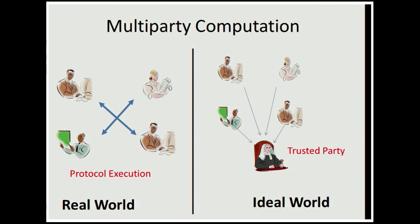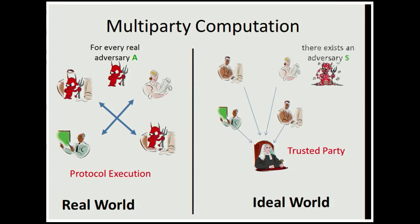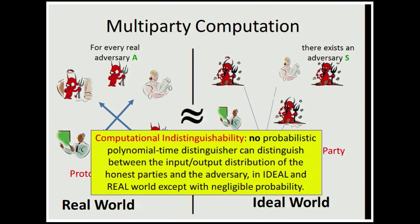Let me define things more formally. In multiparty computation, security is defined by comparing a real-world execution of the protocol with an ideal-world scenario. We require that for every real-world adversary that corrupts parties adaptively, there exists an ideal-world adversary that corrupts the same parties in such a way that the output distribution of parties in the real world is indistinguishable from the output distribution in the ideal world. More formally, no probabilistic poly-time distinguisher can differentiate between the input-output distributions, except with negligible probability.